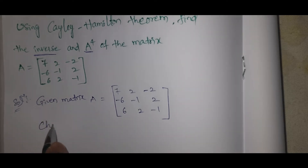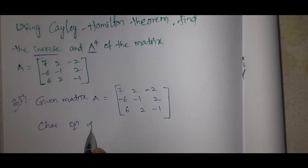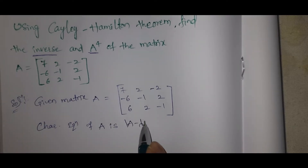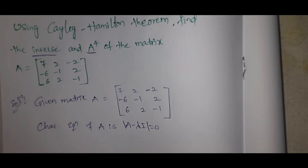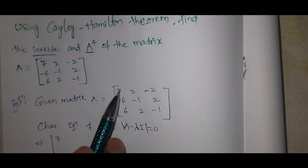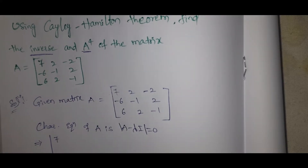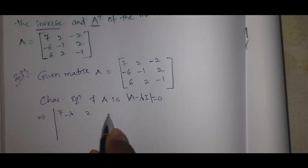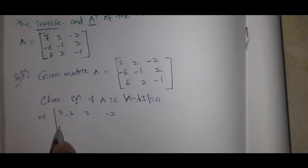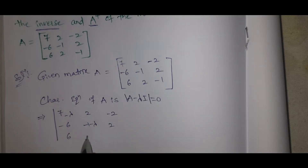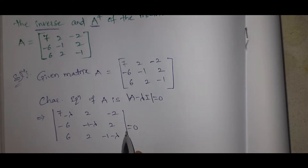First step: find the characteristic equation of A. The determinant of A minus lambda I equals 0. The diagonal elements become 7 minus lambda, minus 1 minus lambda, and minus 1 minus lambda. So the determinant is: |7−λ, 2, −2; −6, −1−λ, 2; 6, 2, −1−λ| = 0.